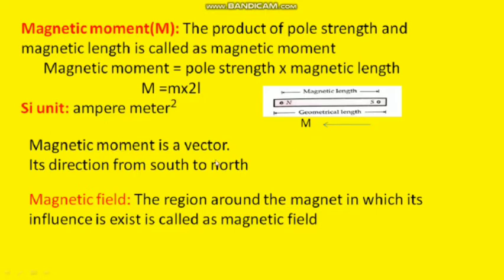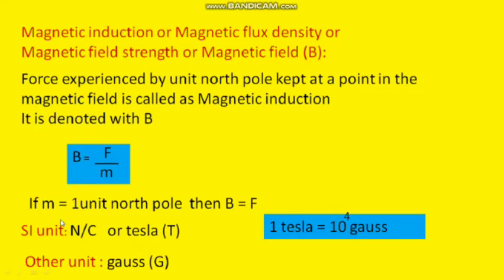What is magnetic field? The effect of a magnet exists up to a certain region, and that region is called the magnetic field. We can measure the magnetic field strength using a physical quantity called B.